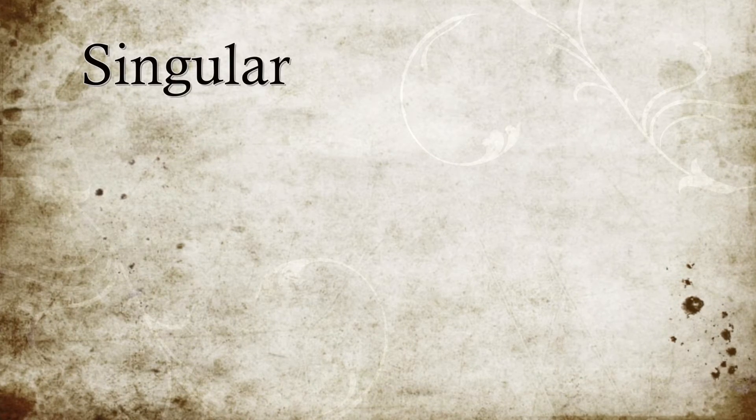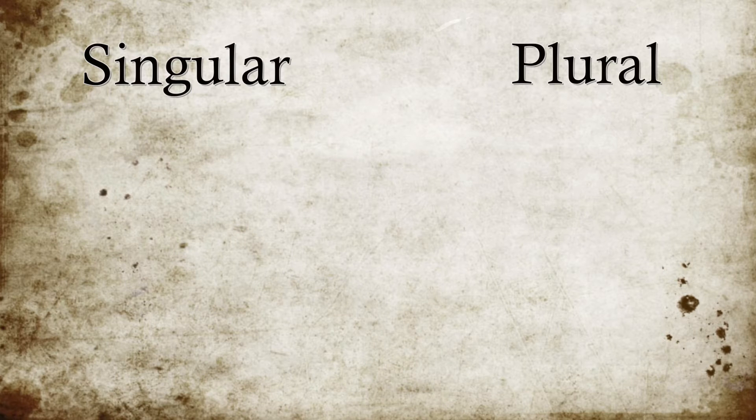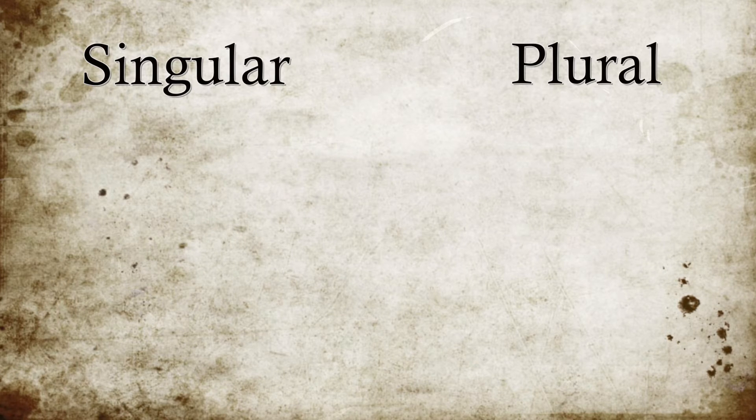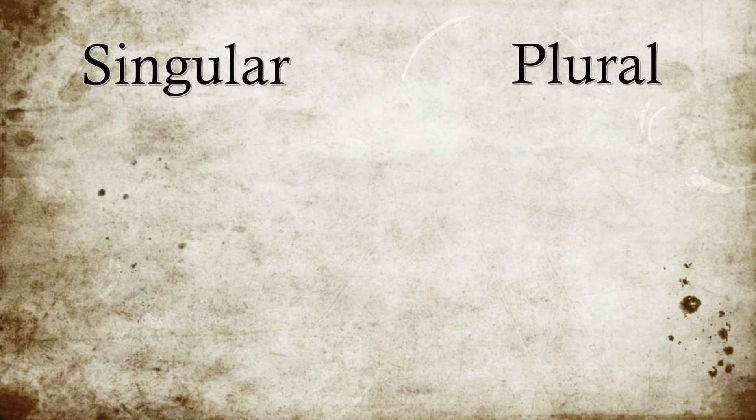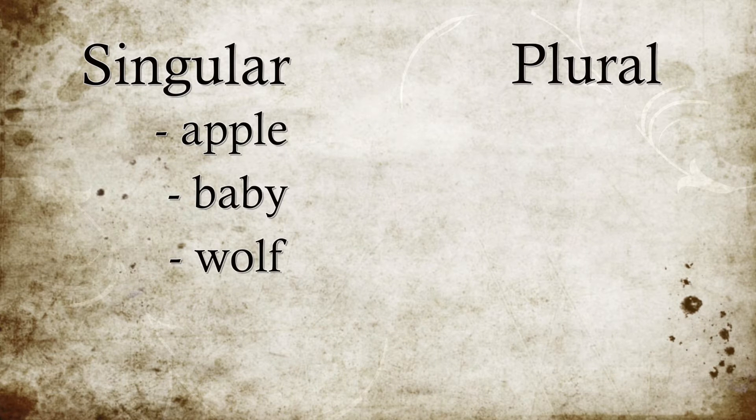The next thing we're going to be moving to is singular nouns and plural nouns. I'm going to be going over how a singular noun and a plural noun are different from each other, and that can get kind of complicated. So right now we're just going to focus on being able to identify a singular versus plural noun. A singular noun is going to refer to a single or one person, place, thing, or idea. Examples would include apple, baby, wolf, or ox.